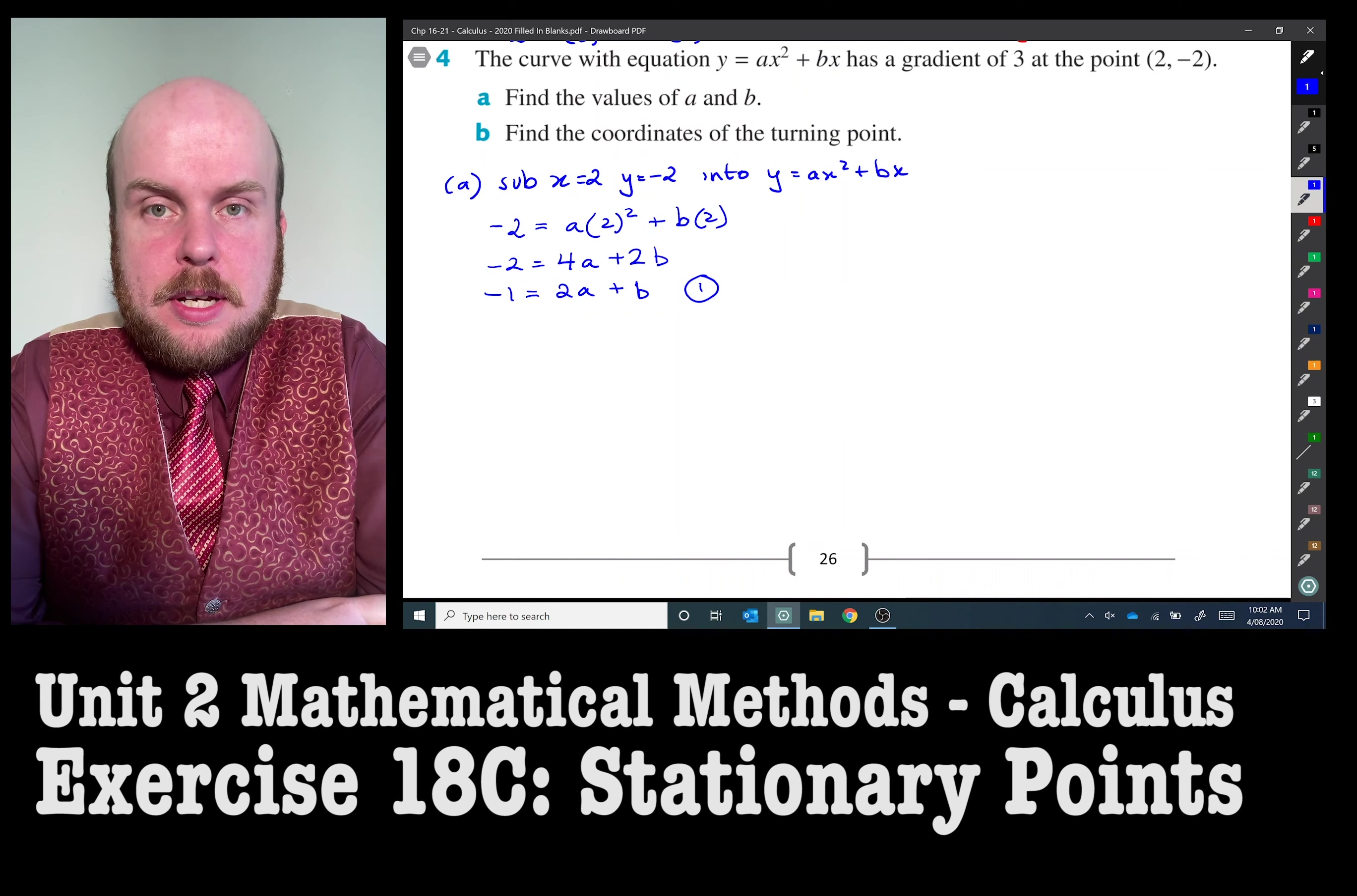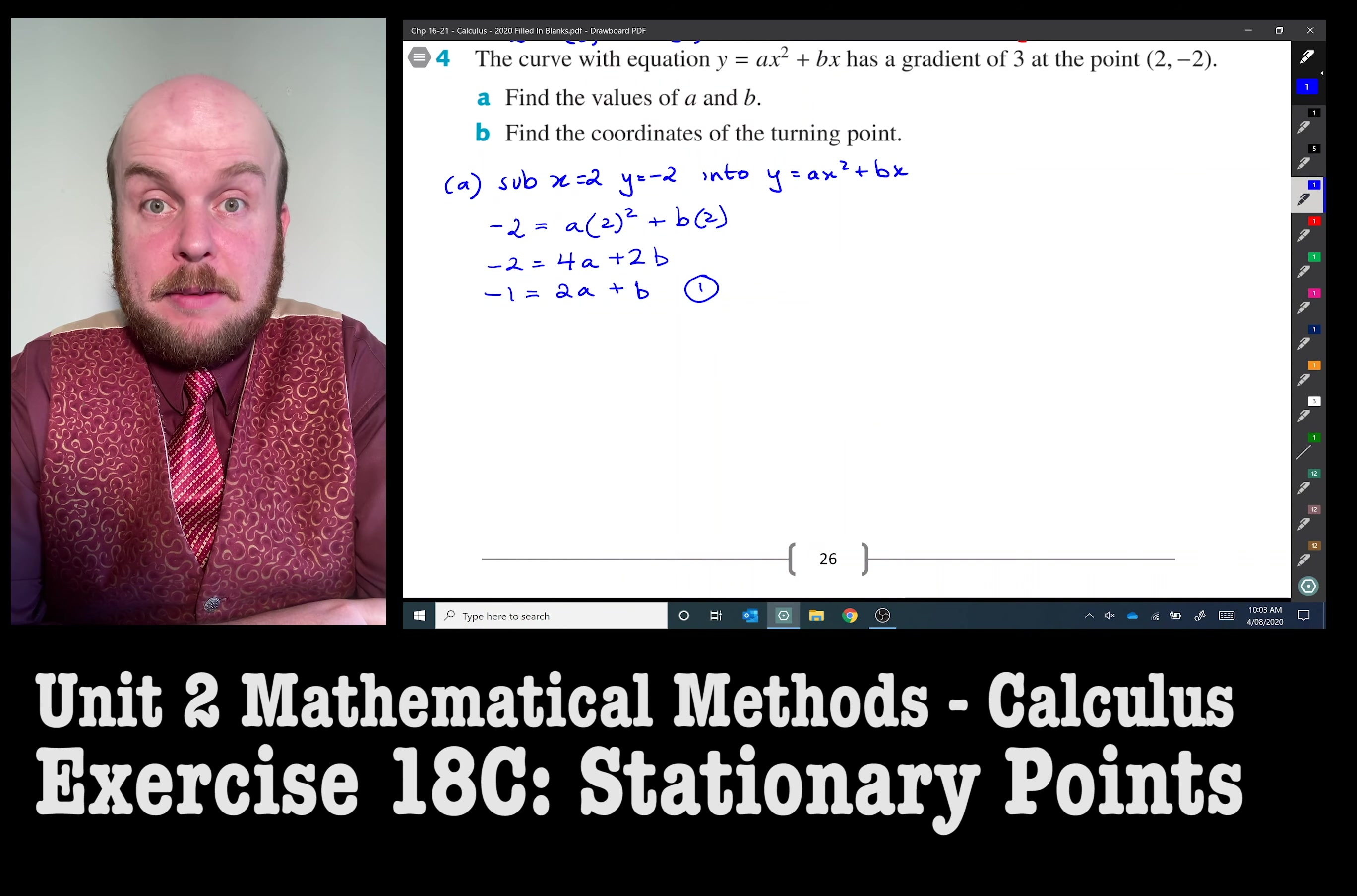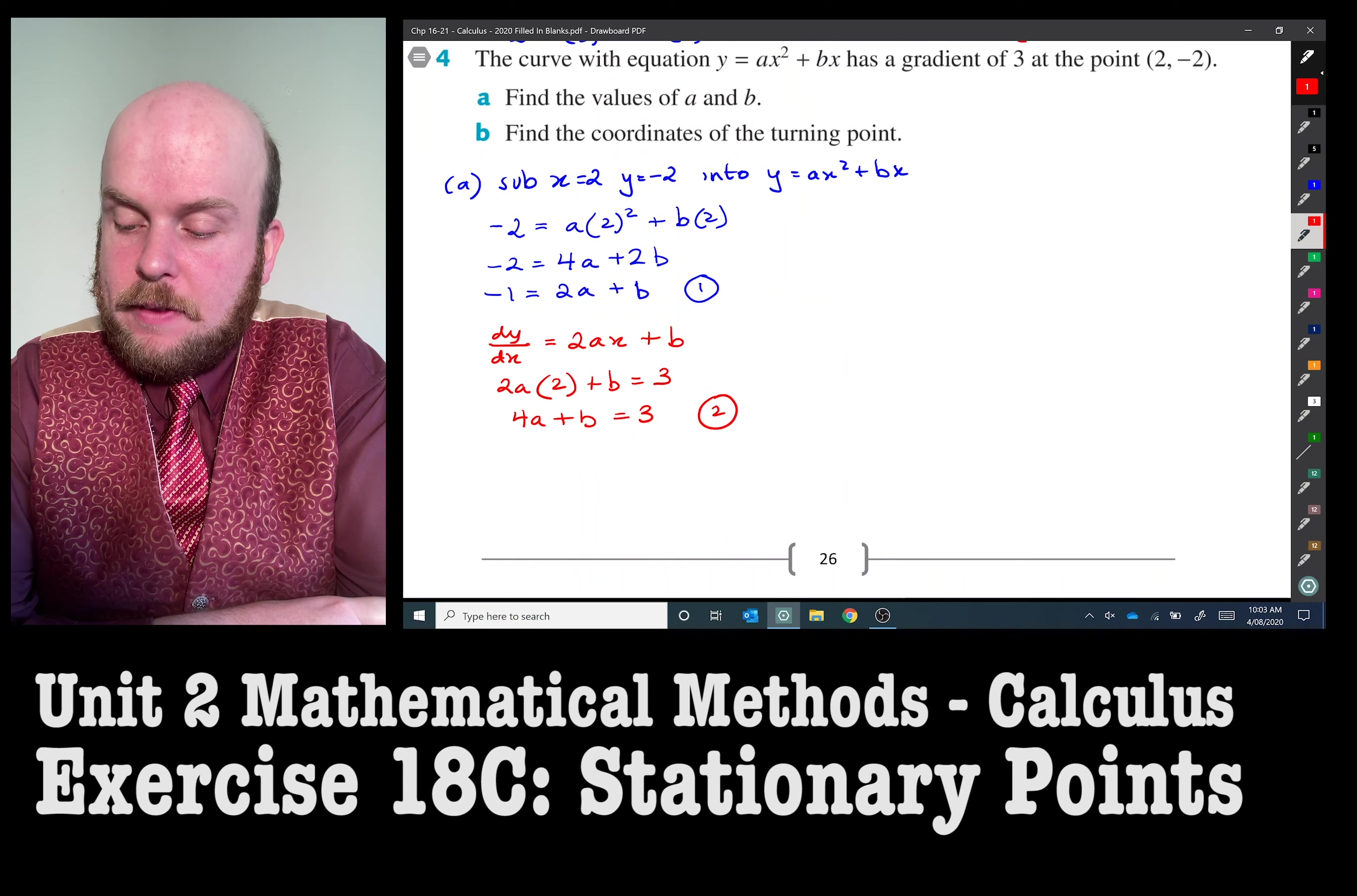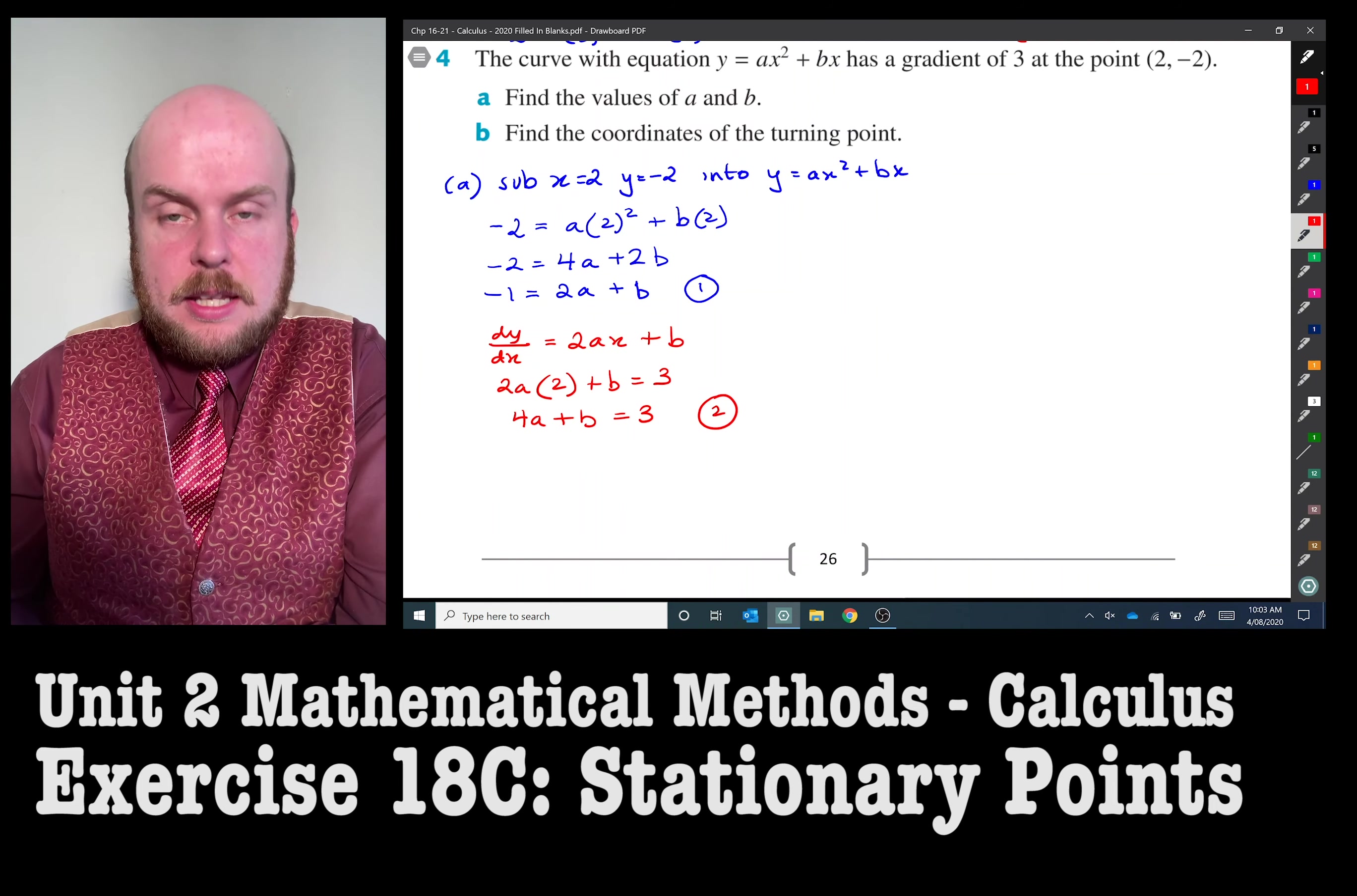So normally we'd have a second coordinate to substitute but we don't this time. We've only got the fact that it has a gradient of three at the point (2, -2). So in other words when the derivative is equal to three the x value will be equal to two. So we'll need to do the derivative of this formula, this ax squared plus bx, and substitute accordingly. So I've taken the derivative of that formula, I've made it equal to three because it has a gradient of three at the point (2, -2). So when x is equal to two it has a gradient of three. That's exactly what I've done and I've got 4a plus b equals three.